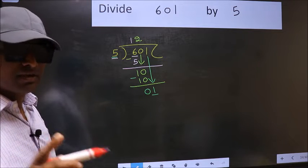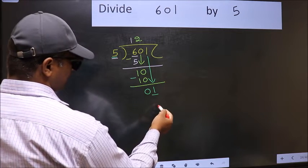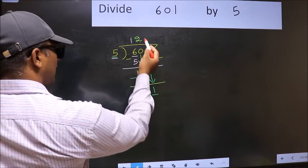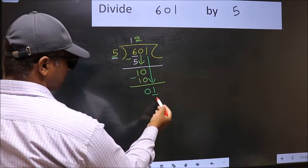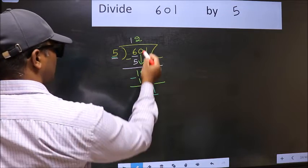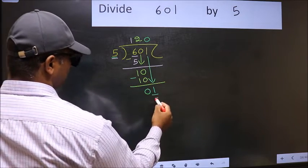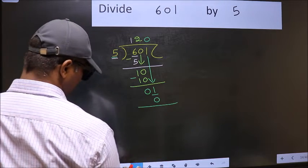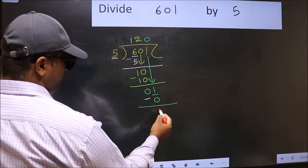Instead, what you should think of doing is what number should we write here? If I take 1, we will get 5. But 5 is larger than 1. So what we should do is we should take 0. So 5 into 0, 0. Now you should subtract. 1 minus 0, 1.